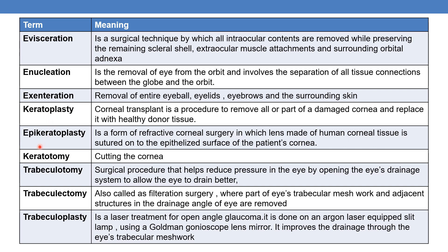The next term is epikeratoplasty. Epikeratoplasty is a form of refractive corneal surgery in which a lens made of human corneal tissue is sutured onto the epithelized surface of the patient's cornea.